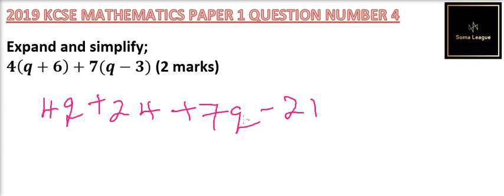So you can put the right terms together. It is 4Q plus 7Q, that will give you 11Q. Then we say 24 minus 21, that will give you 3. So you have plus 3.